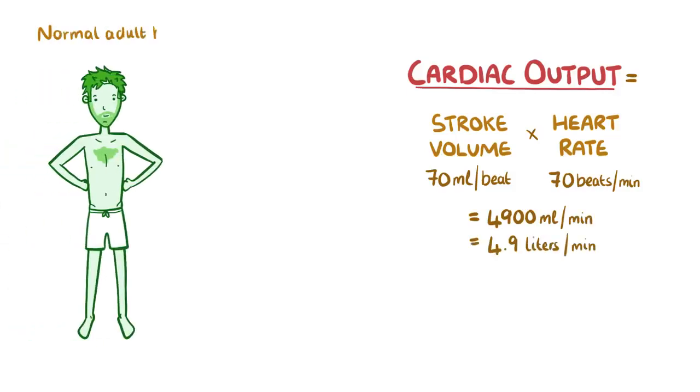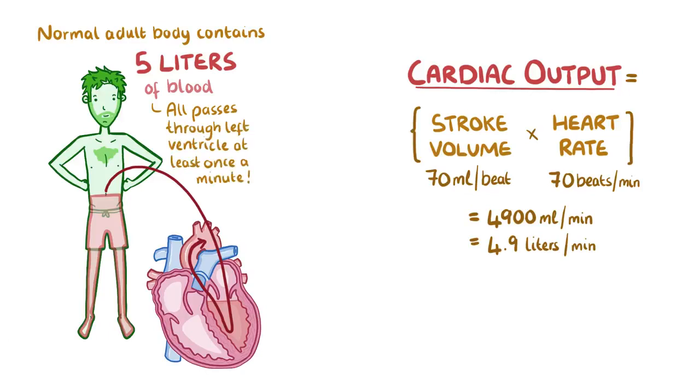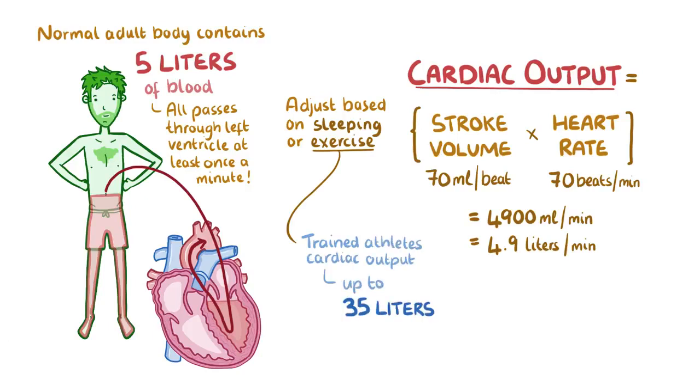Now remember that a normal adult body contains approximately 5 liters of blood. So this means that every last drop of blood travels through the left ventricle at least once every minute. Of course, the heart can adjust its heart rate and the stroke volume based on whether you're sleeping or exercising. In fact, trained athletes can have a cardiac output that reaches up to 35 liters per minute.